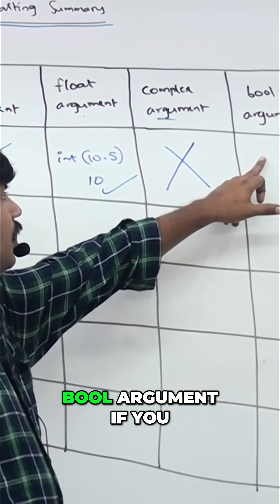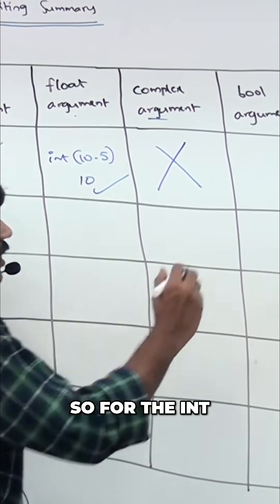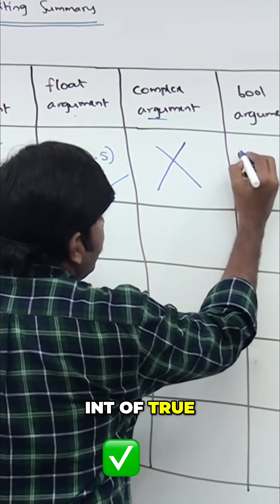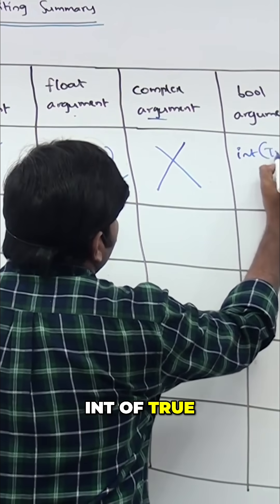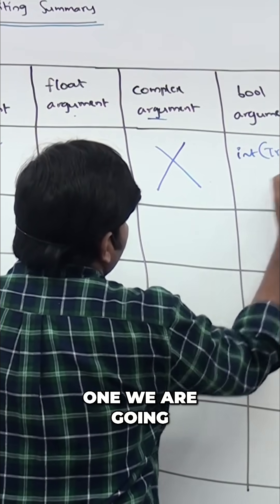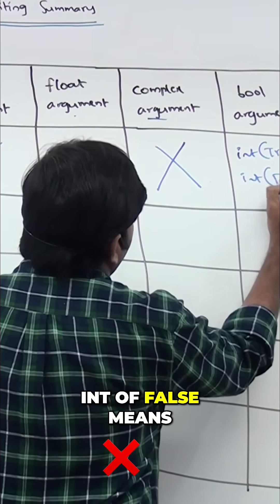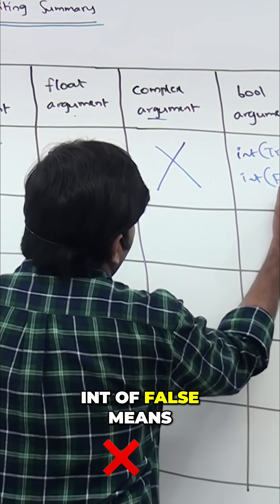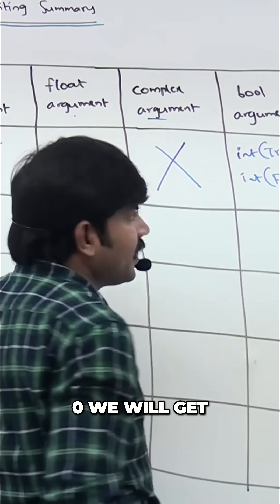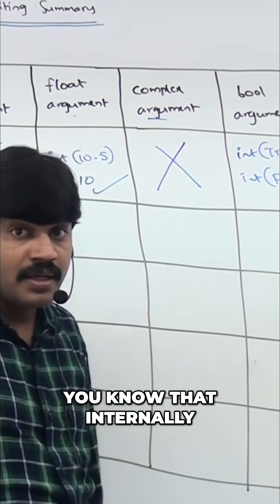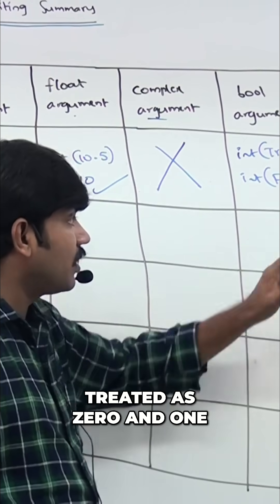Next, if you pass a boolean argument to the int function — int(True) gives 1, and int(False) gives 0. Internally, True and False are treated as 1 and 0 respectively, which is why this works.